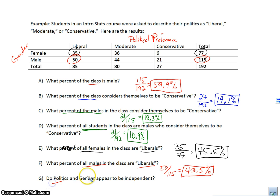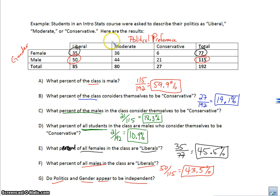Now here's a key question: do politics and gender appear to be independent? What that means is, are there differences in political preference between genders? If there are differences, then there seems to be an association — they're not independent. If they were independent, it wouldn't matter whether you're female or male; you'd pick roughly the same political preference.